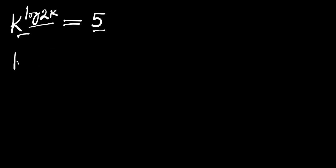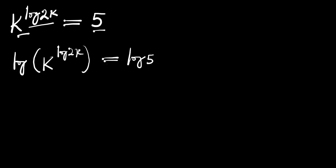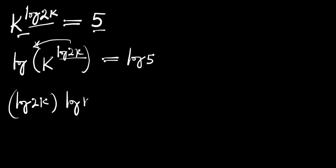The first step is for us to take the log of both sides of this equation. We have log of k to the power of log of 2k, and this equals log of 5. As usual, the exponent here will come in front, so we have log of 2k times log of k equals log of 5.